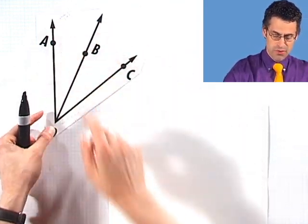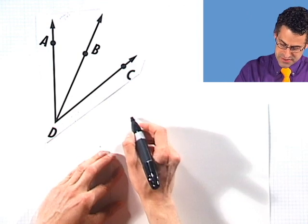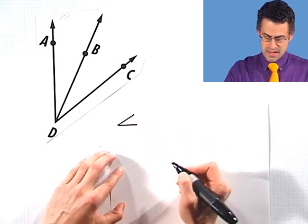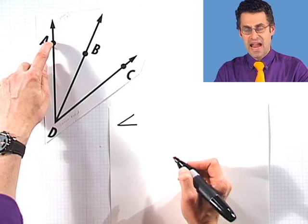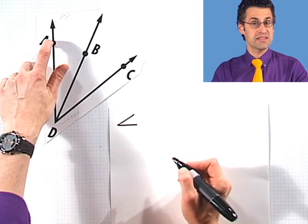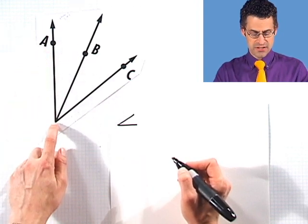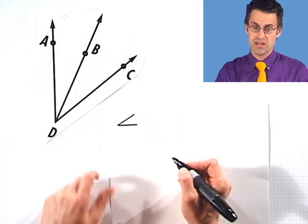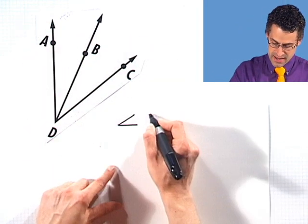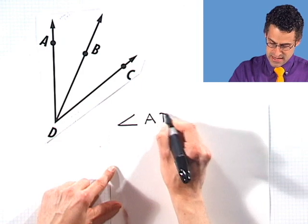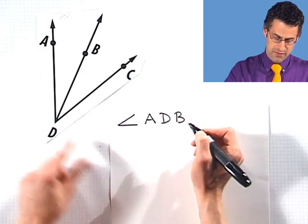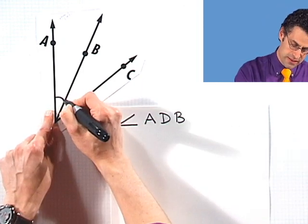Now how am I going to write that? Well the notation that we use is we write a little angle symbol, and then I'm going to write these letters. The order of the letters always has to be that the center letter is the common endpoint that the two rays share. So in this case I could write it as A, D, B, and that represents this angle right there.